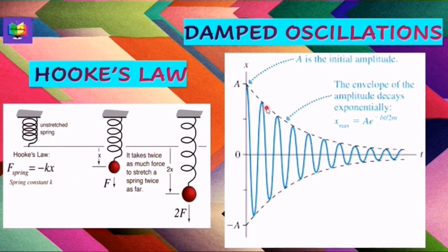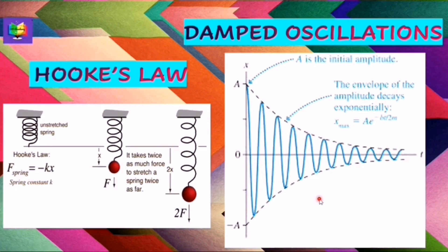Oscillations we observe around us do not go on forever — if damping is present, they die out either gradually or rapidly. The oscillation of a swing is an example: due to air friction, oscillations decrease and the swing ultimately comes to rest. The amplitude of damped oscillations decreases or decays exponentially with time, as can be seen here.